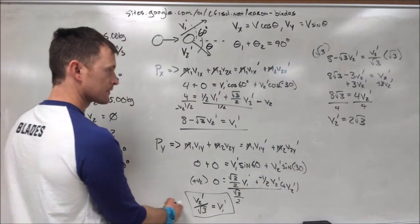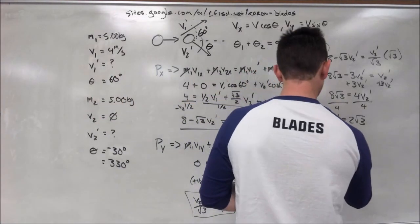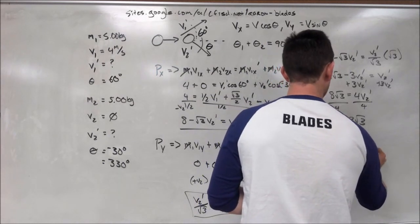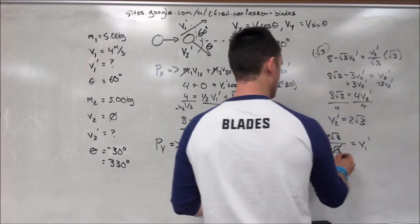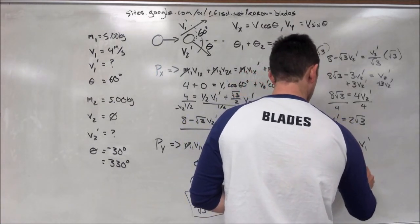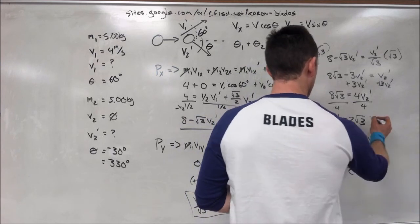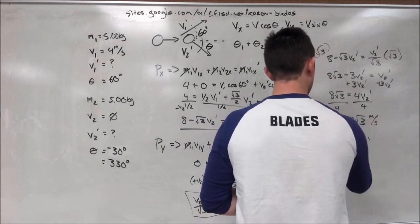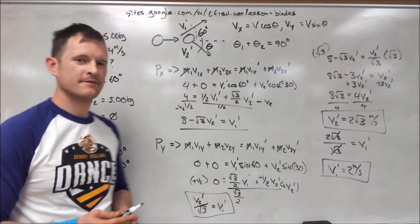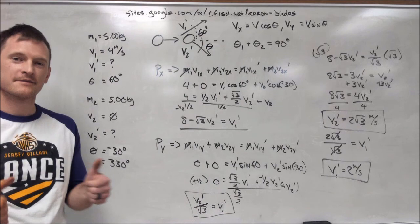Now, we can plug that value for v2 prime into one of our equations for v1 prime. And if I do it with v2 prime over square root of 3, I end up with v1 prime is equal to 2 meters per second. I hope this was helpful, and I'll see you in class.